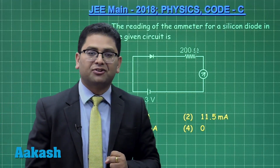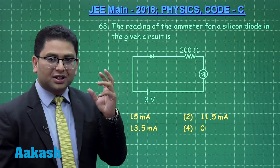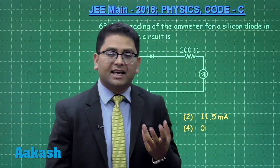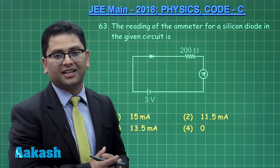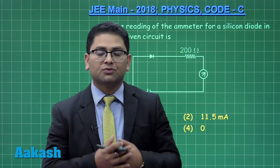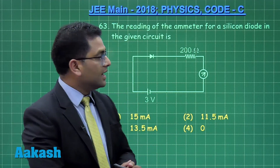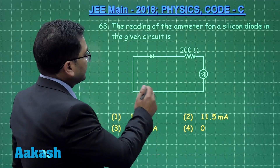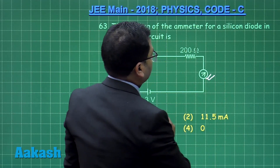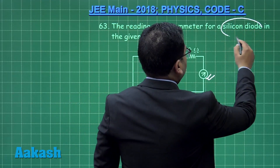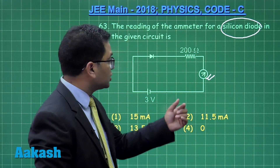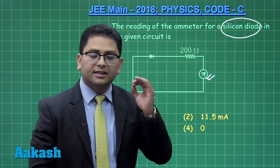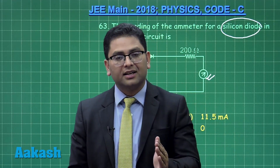Now let's move to question number 63. From the figure it is very clear that question 63 is from semiconductors — specifically a diode circuit. This topic is not in JEE Advanced but is specifically in JEE Mains, and experience says topics only in JEE Mains are heavily targeted in the exam. This is a silicon diode and we are reading an ammeter. The question has not said the diode is ideal — if it were ideal, the potential drop across the diode would be zero.